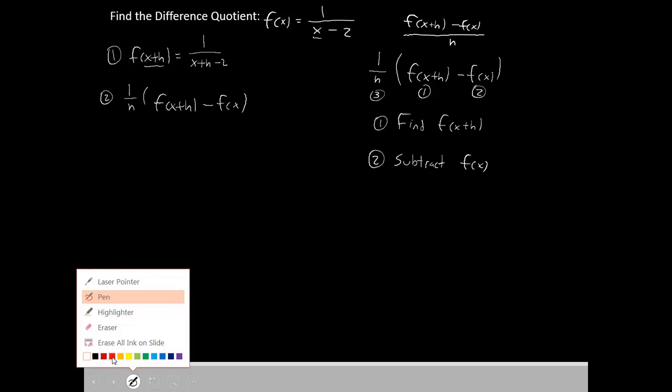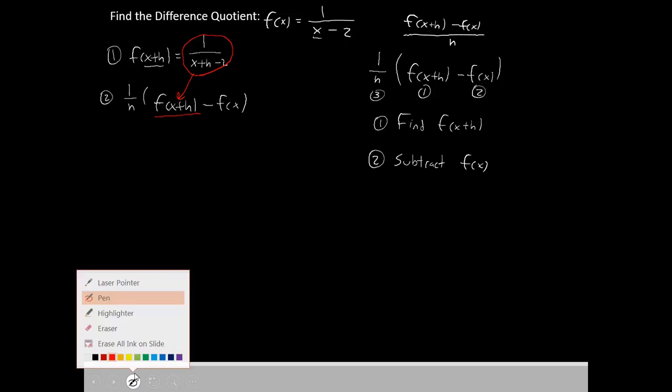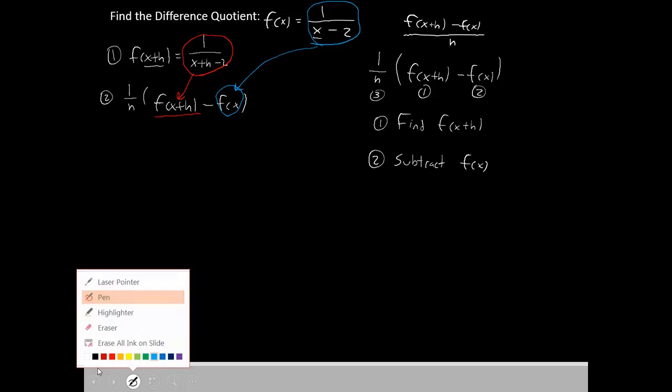Well, we know that f of x plus h is this piece right here. We'll plug it in and replace f of x plus h with this that I've circled. We're also going to replace this f of x right here with this function, our original function. We're just going to plug both pieces in and rewrite the whole thing.